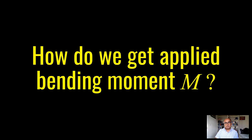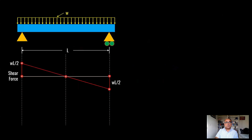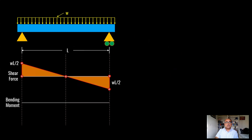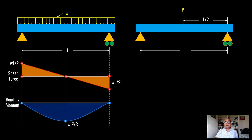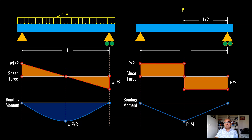How do we get the applied moment? It depends on loading. For a simply supported beam with a uniformly distributed load, the shear force is W·L over 2, where W is the distributed load in kilonewtons per meter, and the bending moment is W·L² over 8, where L is the length of the member. For a central point load P, the shear force is P over 2 and the bending moment is P·L over 4, where P is the applied load in kilonewtons.